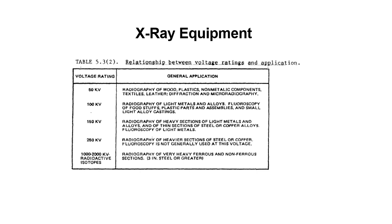This slide shows the relationship between voltage ratings and application. At 50 kilovolts: radiography of wood, plastics, non-metallic components, textiles, leather, diffraction, and micro-radiography. At 100 kilovolts: radiography of light metals and alloys, fluoroscopy of foodstuffs, plastic parts and assemblies, and small light alloy castings. At 150 kilovolts: radiography of heavy sections of light metals and alloys and thin sections of steel or copper alloys. At 250 kilovolts: radiography of heavier sections of steel or copper; fluoroscopy is not generally used at this voltage. At 1,000 to 2,000 kilovolts and radioactive isotopes: radiography of very heavy ferrous and non-ferrous sections, 3 inches of steel or greater.